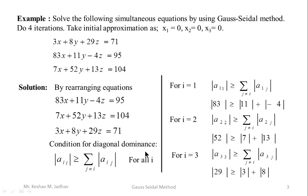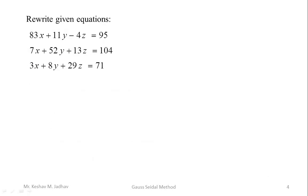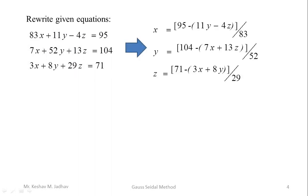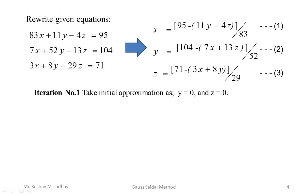So we can proceed with the Gauss-Seidel method. From the first equation, take x on one side and all other terms on the other side. From the second equation, take y on one side. From the third equation, take z on one side. This gives us formula equations (1), (2), and (3) for calculating x, y, and z respectively. We can now go to iteration number one.